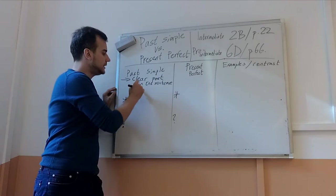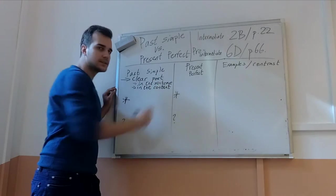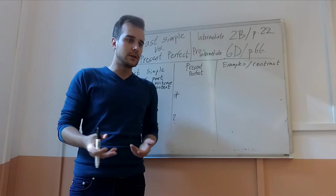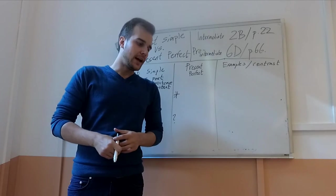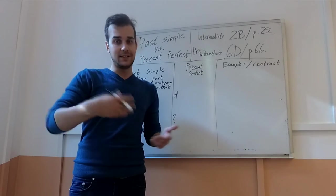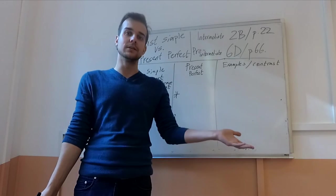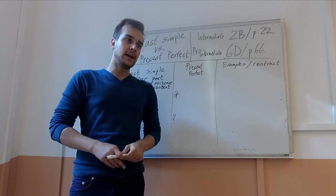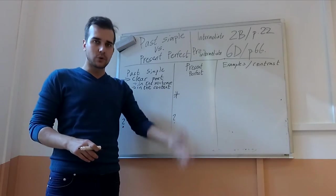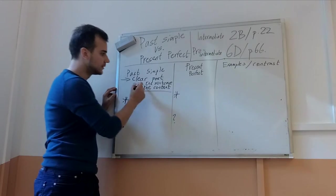And it can also be in the context. So that means, in the situation, I know exactly when it happened. For example, we are talking about our last holiday, and we are talking for 2 minutes. And later on, I will still say I went to the Netherlands, for example. And I don't have to say when, because I know from context that we are talking about the last holiday. And then it's clear.